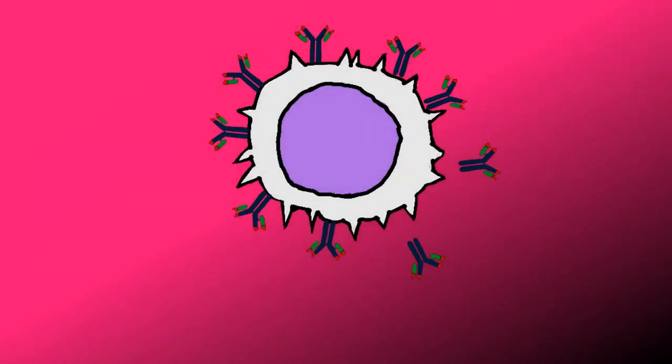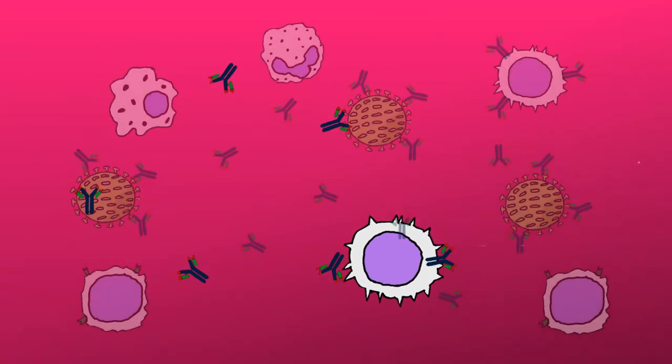To understand how a vaccine works, we should first understand how the immune system works. On a short recap: when a pathogen enters the body, the immune system fights it off. B cells make special proteins called antibodies to deactivate pathogens. Some of the immune cells become memory cells during this process.